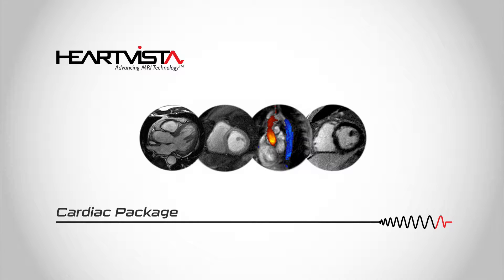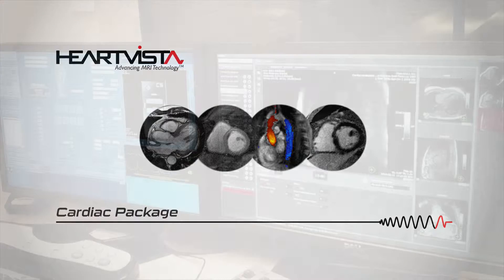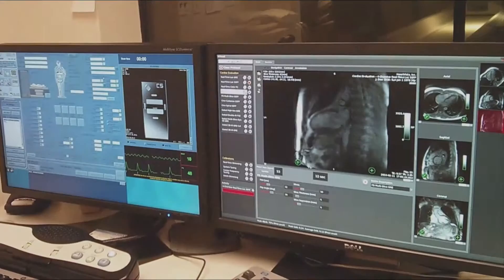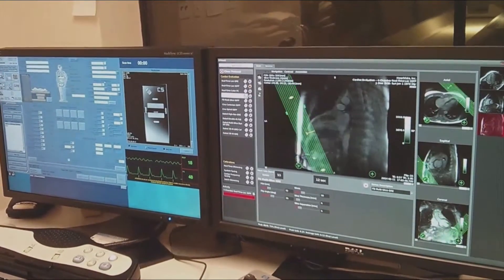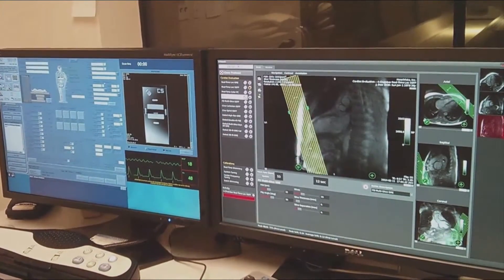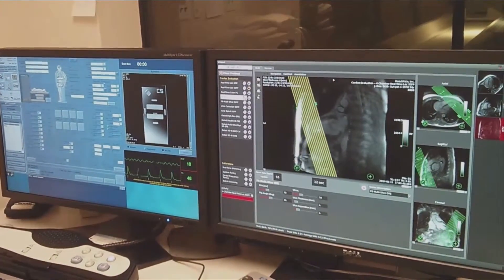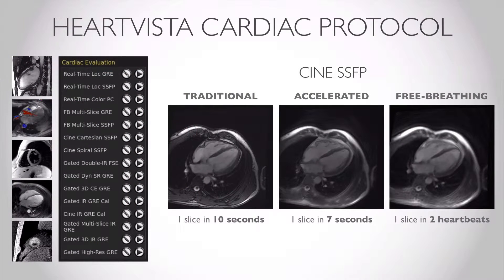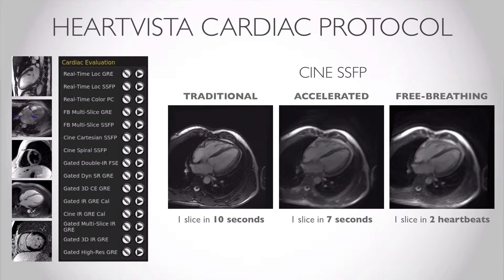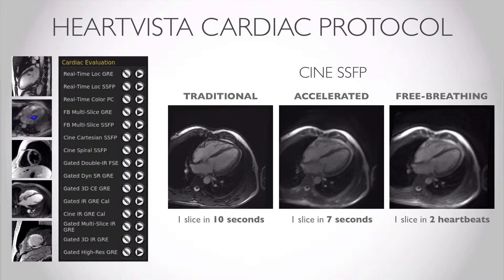The HeartVista cardiac package is an advanced MRI acquisition system that connects to existing GE MRI scanners. This sophisticated software package provides a comprehensive protocol that can be used to perform a cardiac exam using free breathing and accelerated pulse sequences.